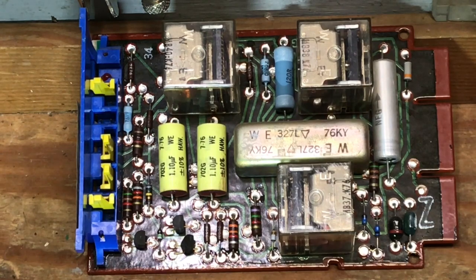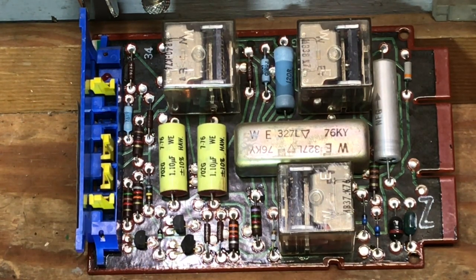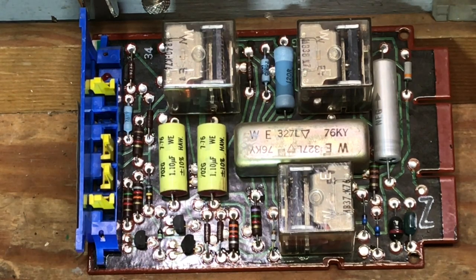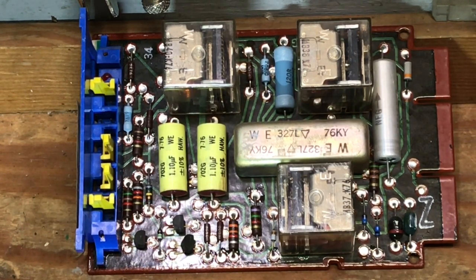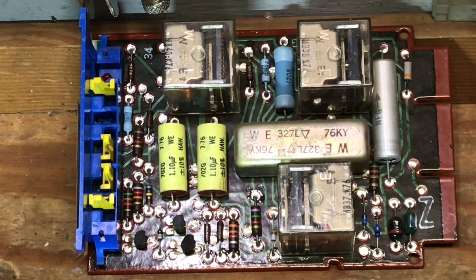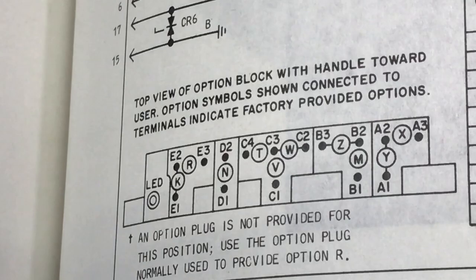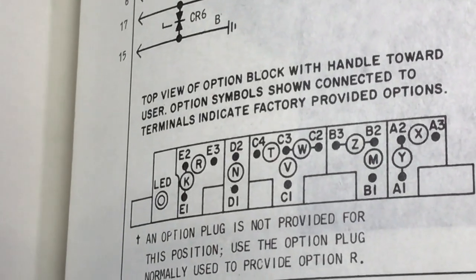The information for changing options on line cards is generally found in the Telephone Collectors International website. If you go to the TCI library, then you can find schematics for telephones and systems. You'll have to search for the 400G KTU or 400H KTU or the 400D. Here's the options that are available and there's a chart that tells you what each of the options are.